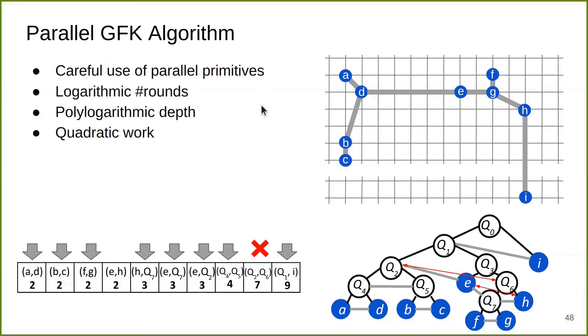The remaining of the algorithm is similar, and eventually we'll have a complete MST. For the parallel GFK algorithm, we make careful use of parallel primitives. We do some tricks to make sure the algorithm only has logarithmic number of rounds, which leads to polylogarithmic depth. It also has quadratic work.